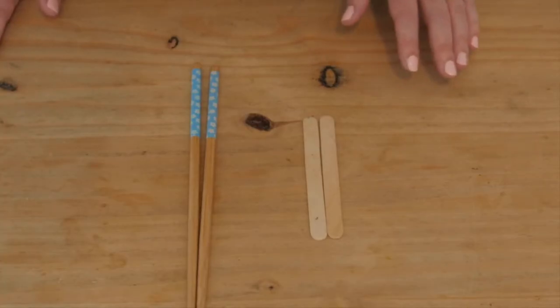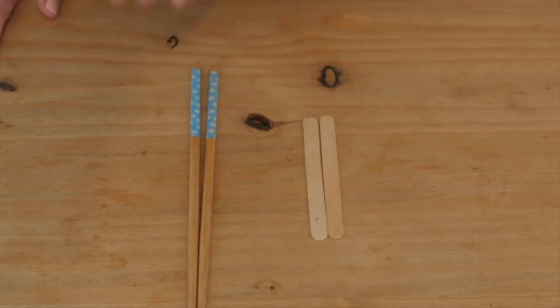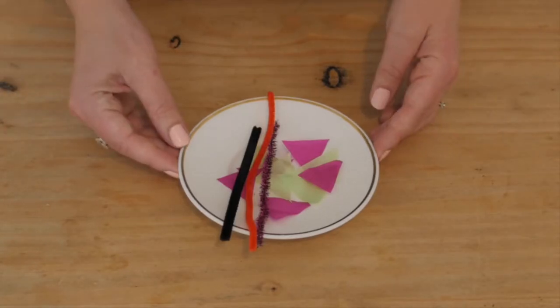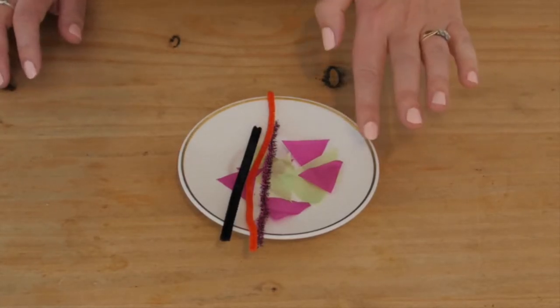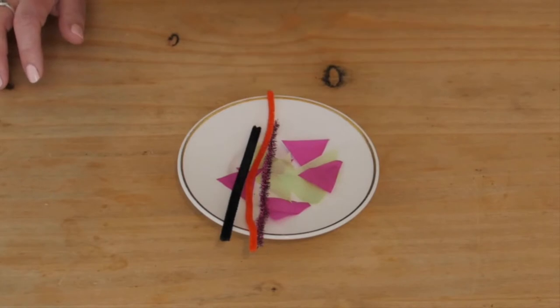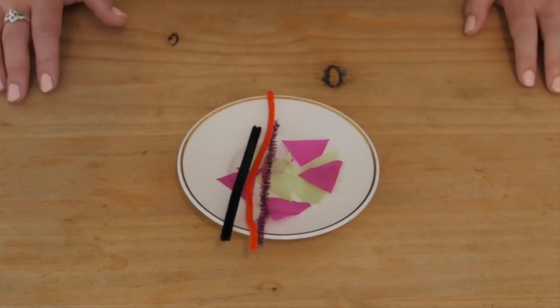You will also need something to puppeteer your caterpillar with, so here we have got some lolly sticks, some chopsticks. You could also use pencils or anything else. To add some finishing touches to your caterpillar I have cut out some tissue paper and we have also got some pipe cleaners for its antennae.